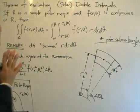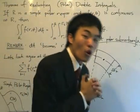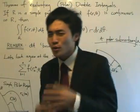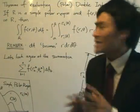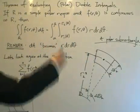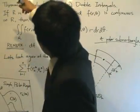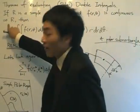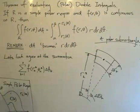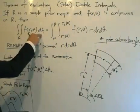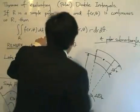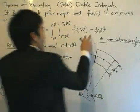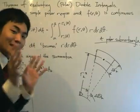Let's go straight to the theorem for evaluating polar double integrals, otherwise known as double integrals in polar coordinates. The process is exactly the same as double integrals in rectangular coordinates, but we will soon see some places where things are really not the same. If R is a simple polar region and f(r, θ) is continuous on R, then the double integral of the function over region R equals the following iterated integral.